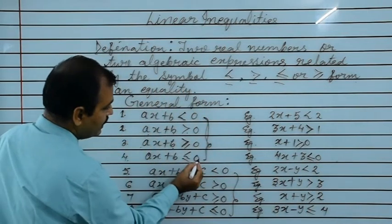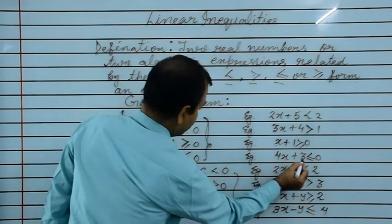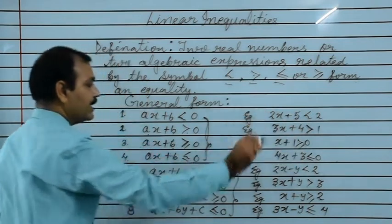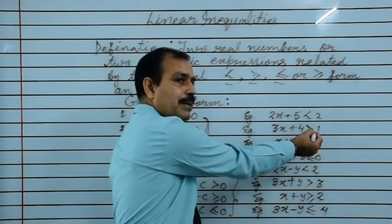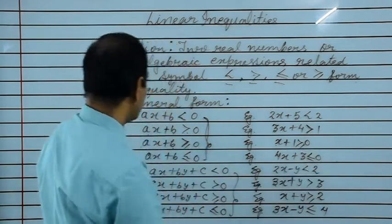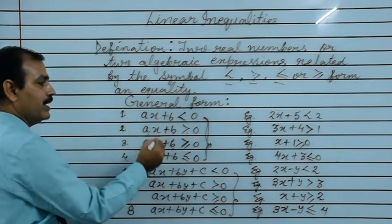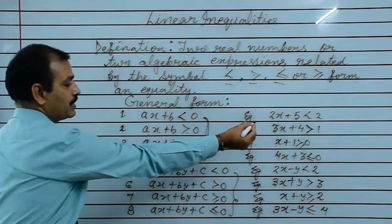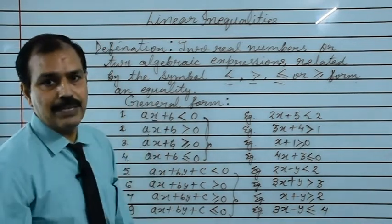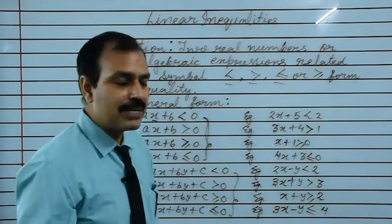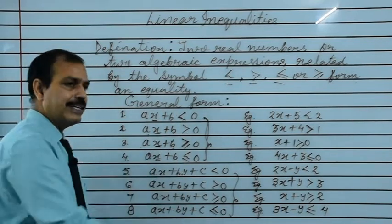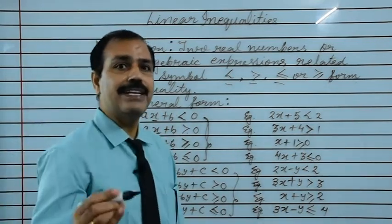See, ax plus b less than equals to 0 — so 4x plus 3 less than equals to 0 is the example. Here greater than equals to 0 is greater than equals to 0. We can put any number here; it is not compulsory that 0 is written there. So this is linear inequality in one variable. One variable means x is the variable here, and a and b are the real numbers. So it is called one variable.